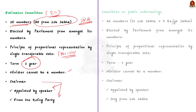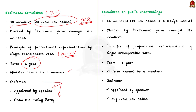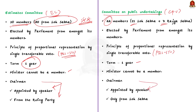The Committee on Public Undertakings, CPU, has 22 members — 15 from Lok Sabha and 7 from Rajya Sabha. They are elected according to the Proportional Representation System by single transferable vote. The term of office is one year and the Chairman is appointed by the Speaker, but must be from Lok Sabha. A Minister cannot be a member of the CPU. You should focus on the points which are common to all committees and also on the unique aspects of each.